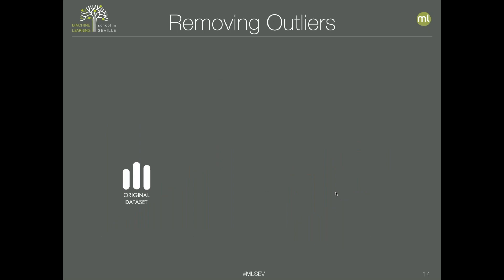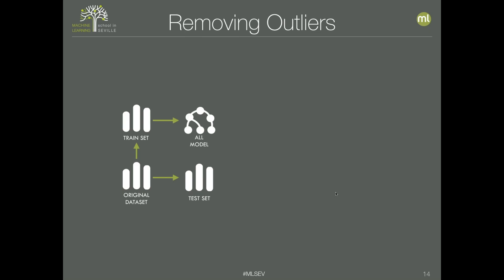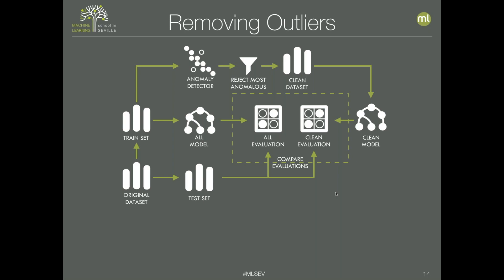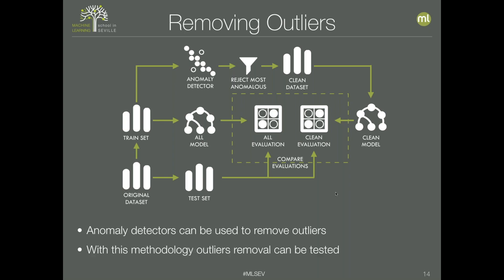The pipeline is as follows: the original dataset is split into training and test sets. First, a model is created with all the data without cleaning and evaluated on the test set. Then an anomaly detector is used to remove outliers from the training set — the most anomalous instances are filtered out, producing a clean dataset. A clean model is then trained and evaluated again to compare performance.